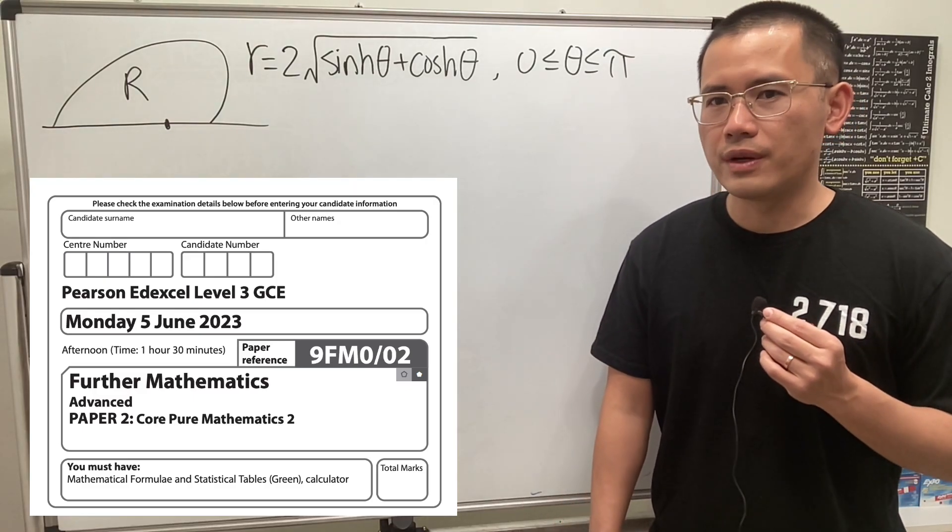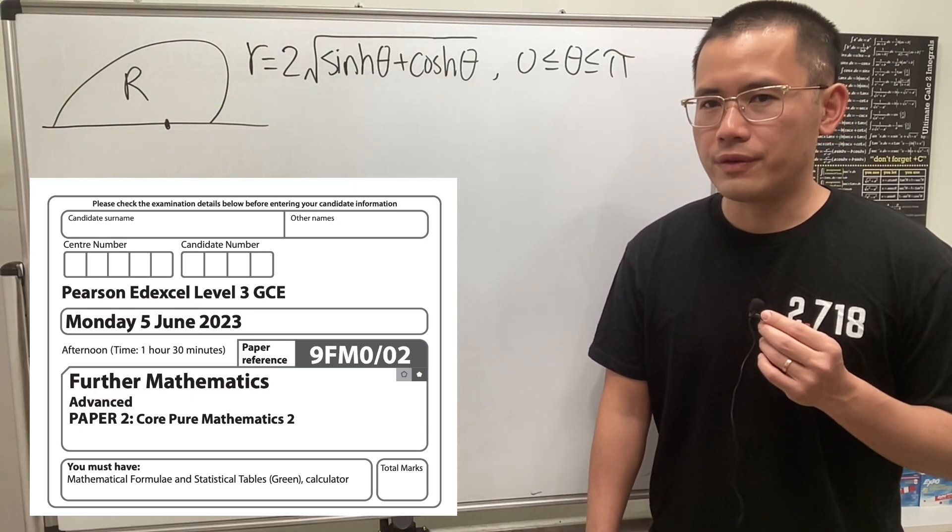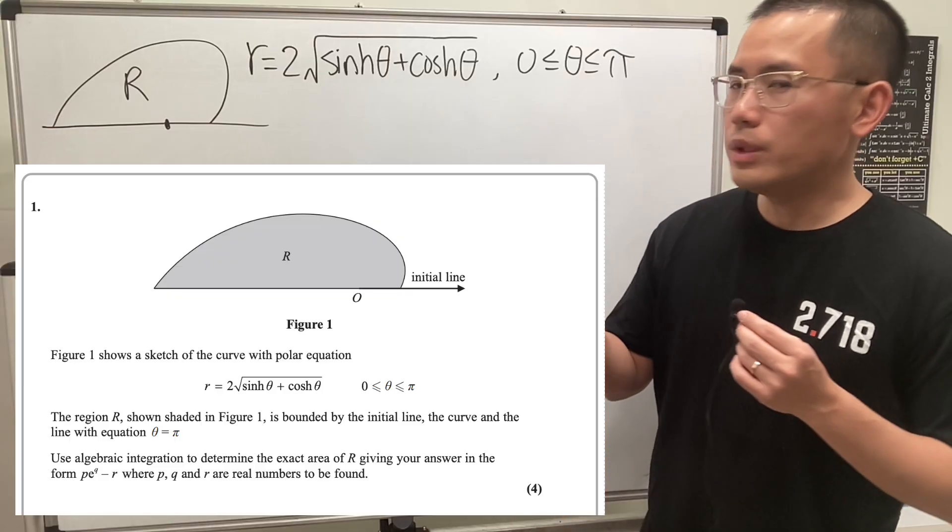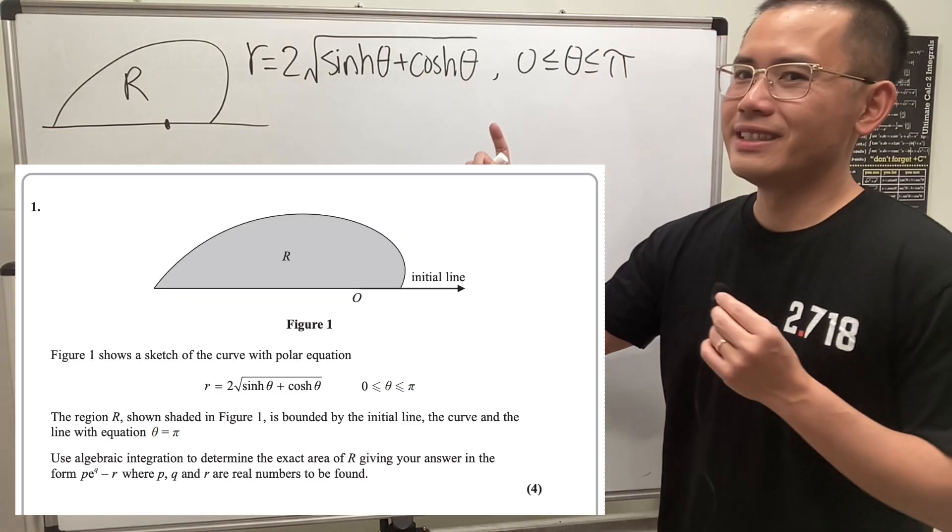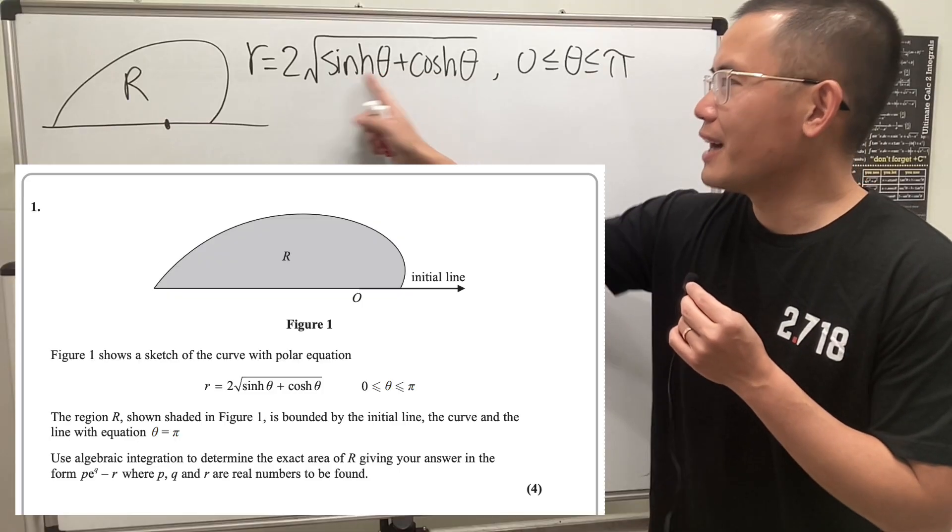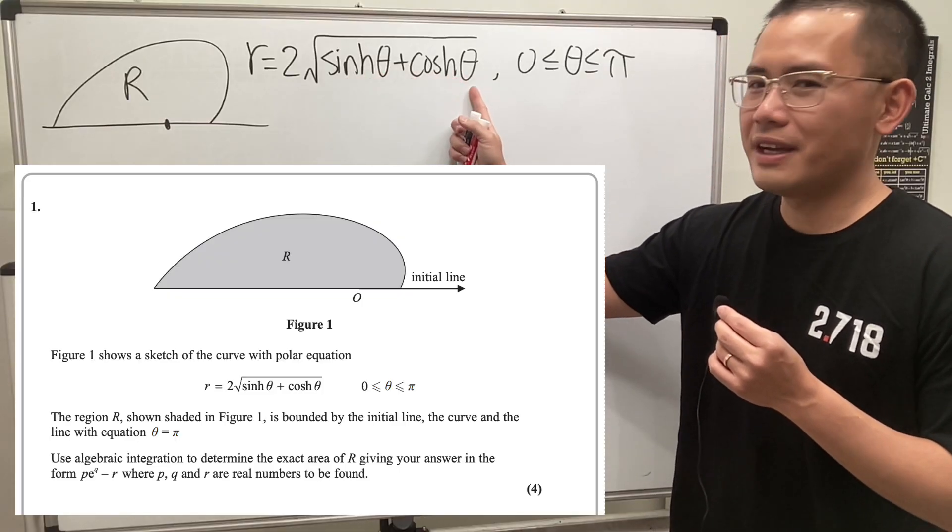Let's take a look at the first question from the 2023 A-level further math test. So here we are given the polar equation, r is equal to 2 times the square root of the hyperbolic sine of theta plus the hyperbolic cosine of theta.